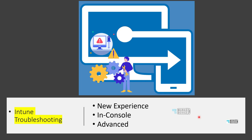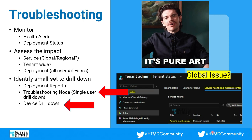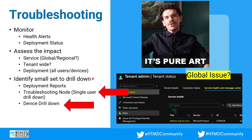Let's check what are the Intune troubleshooting options we have. We'll talk about the new experience, in-console troubleshooting, how to start troubleshooting as a deployment engineer or as a helpdesk, and then advanced ways of troubleshooting in Intune. This is the first part of the Intune troubleshooting video. Troubleshooting is a pure art. I have segregated troubleshooting into three parts mainly: monitoring, assess the impact, and identify a small set of users or devices to drill down deep.